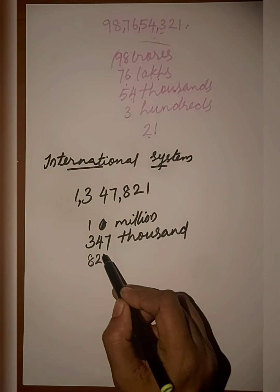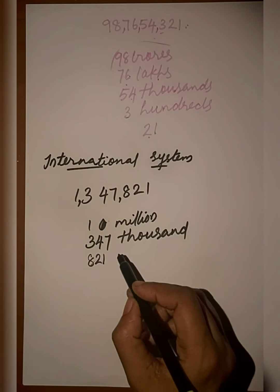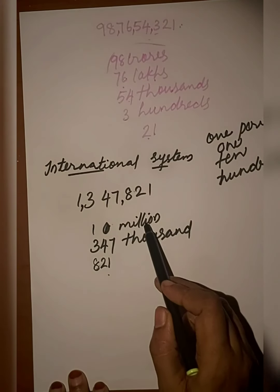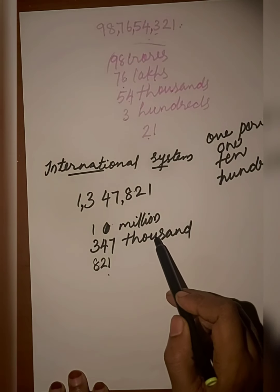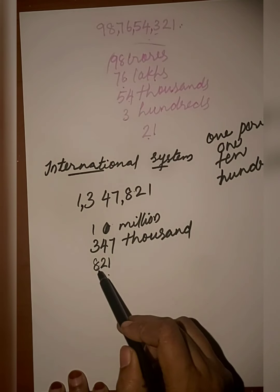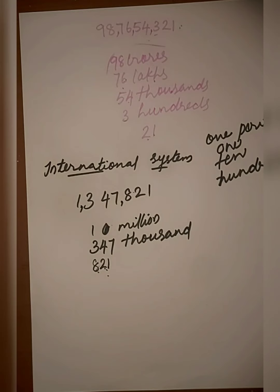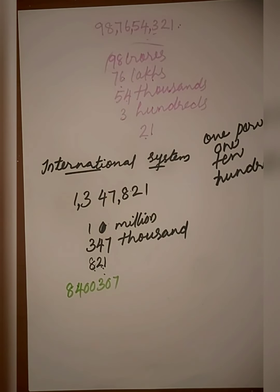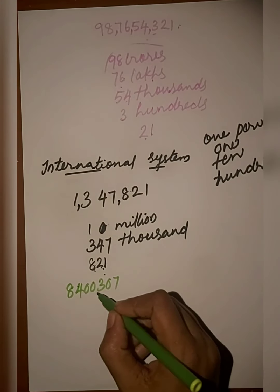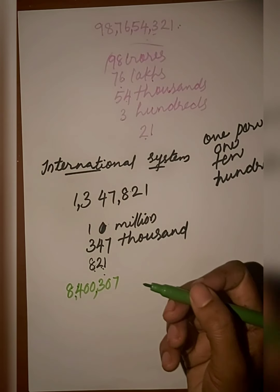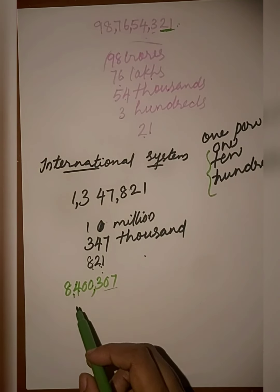...eight hundred twenty-one. So the full number name is: one million three hundred forty-seven thousand eight hundred twenty-one. Now let's check the next example. We place the first comma and the second comma.